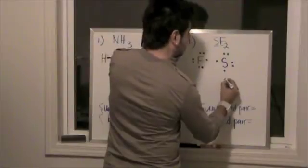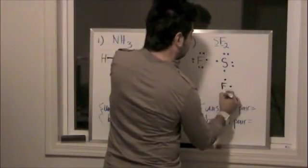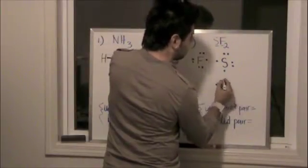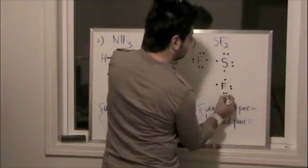So, we have one, two, three, four. I'm not going to draw it there. Five, six, seven valence electrons.